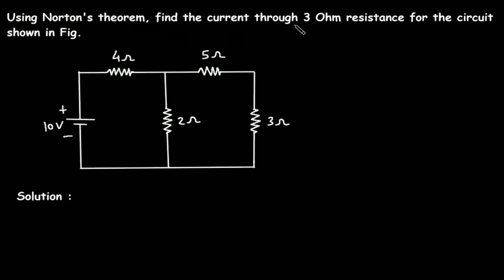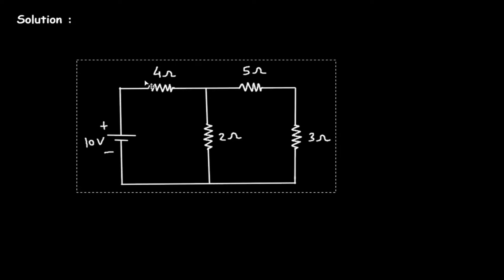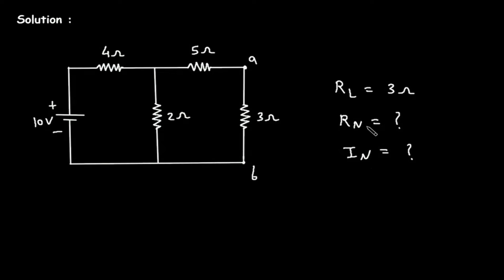Using Norton's theorem, find the current through 3 ohm resistance for the circuit shown in figure. We have to find current through this 3 ohm resistance using Norton's theorem. Let's say this is terminal A and this is terminal B. The value for RL is 3 ohm. Now for Norton's equivalent circuit, we have to find Rn and In. Rn is Norton's resistance and In is Norton's current.